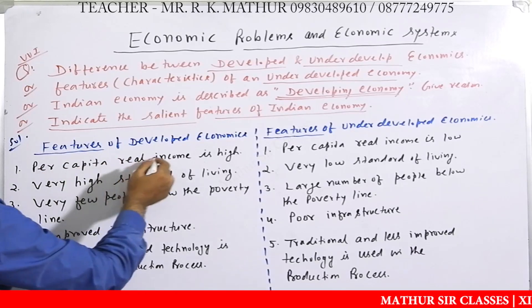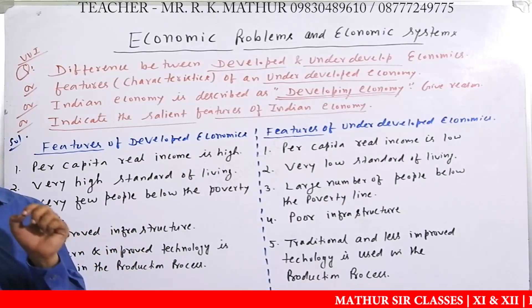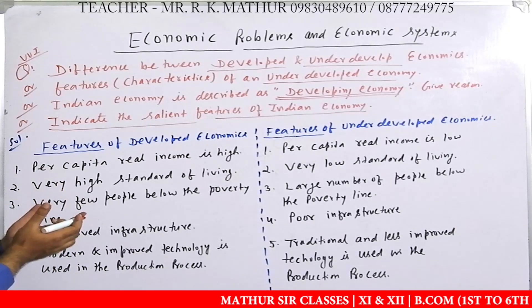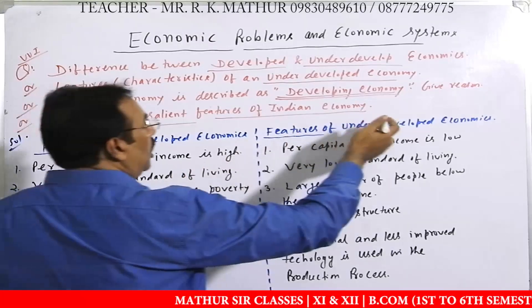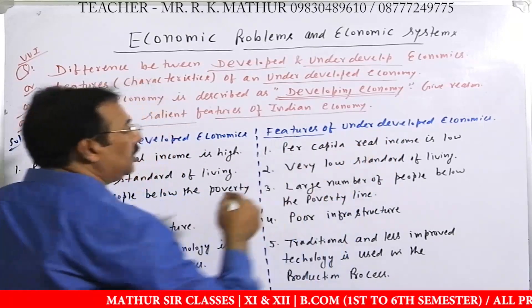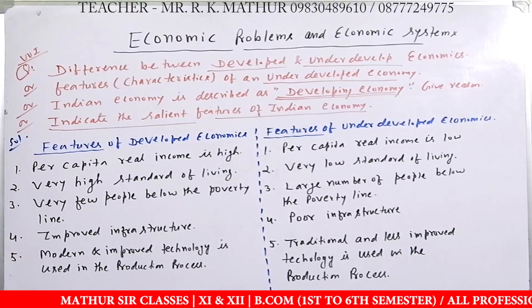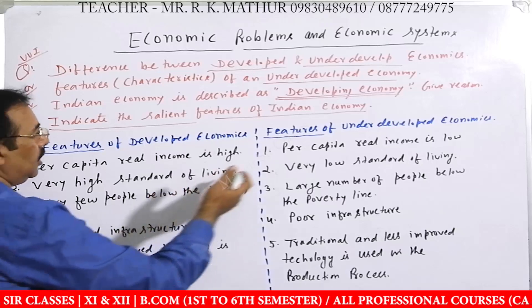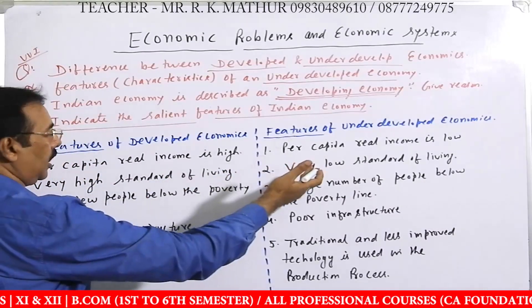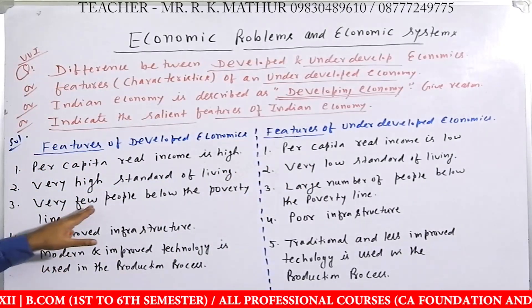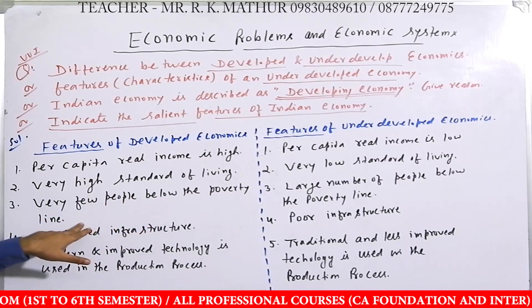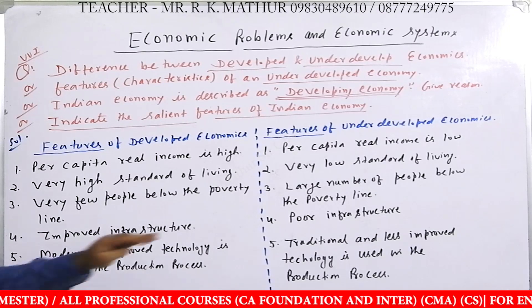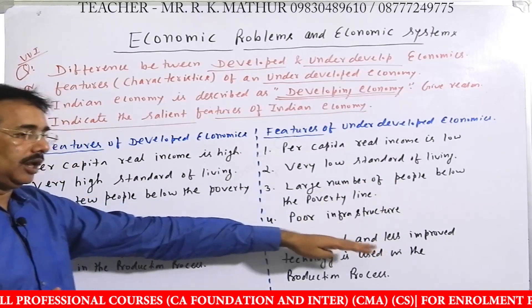Developed country का per capita real income high होता है, इसलिए लोग high standard of living maintain करते हैं। Underdeveloped या developing countries में per capita income कम होती है, इसलिए low standard of living होता है। Developed countries में very few people below the poverty line होते हैं, लेकिन India में large number of people below the poverty line हैं।